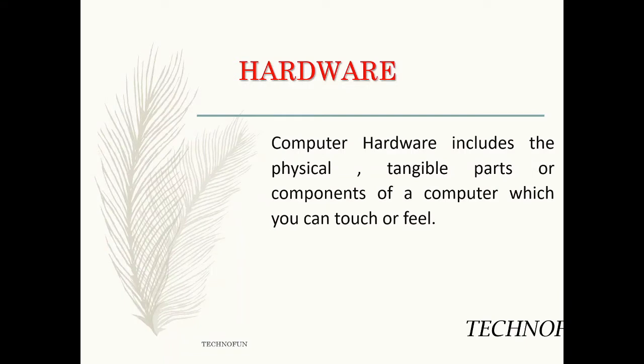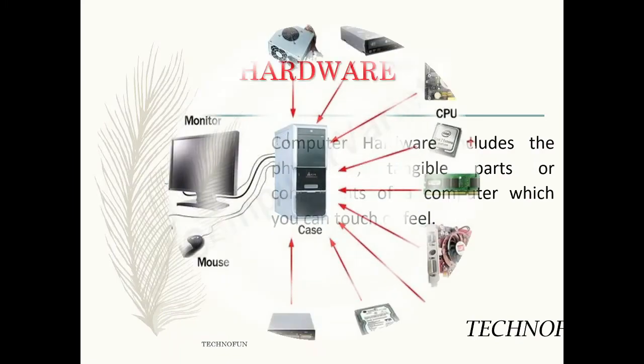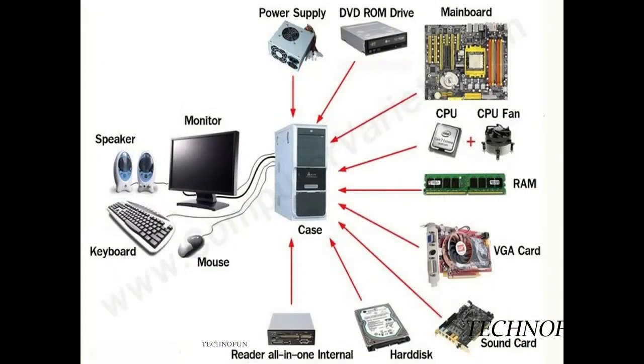In the last video we learned about computer basics and the basic components of the computer. In this video we will discuss hardware and software. Computer hardware includes the physical, tangible parts or components of a computer which you can touch or feel — components with physical existence. For example, output devices, CPU, and storage devices all come under hardware.